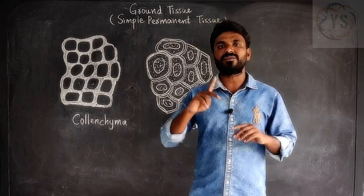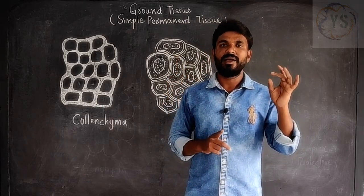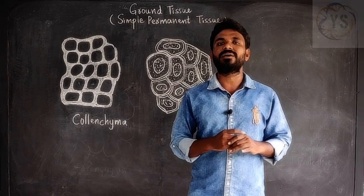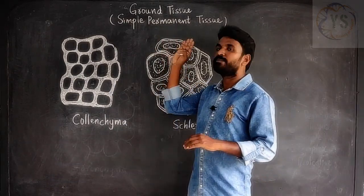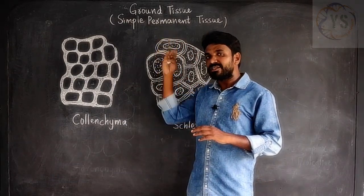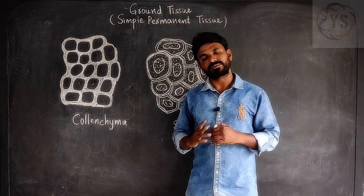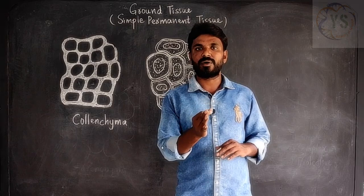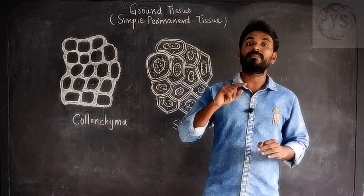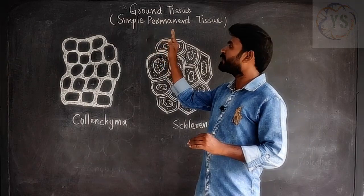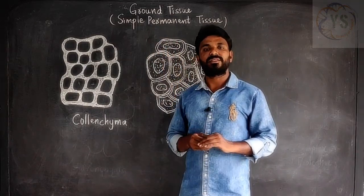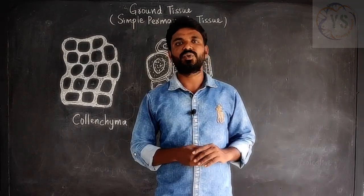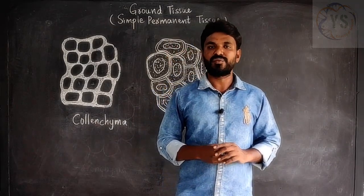So parenchyma, collenchyma, and sclerenchyma together are called ground tissue or simple permanent tissue. These are called simple permanent tissue because parenchyma, collenchyma, and sclerenchyma are all made of only one type of cells each. I think you have understood simple permanent tissue or ground tissue in detail very clearly. Thank you for watching.